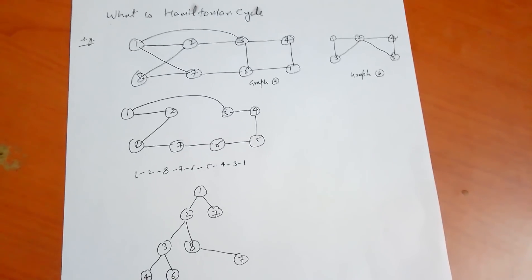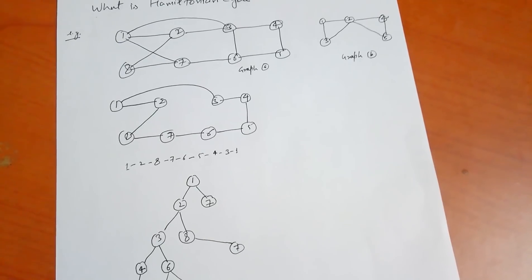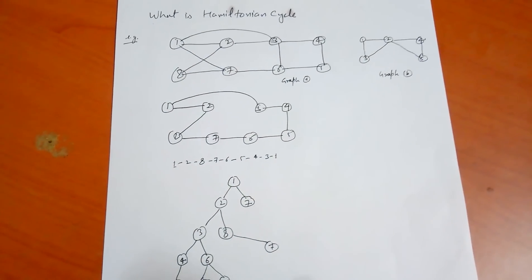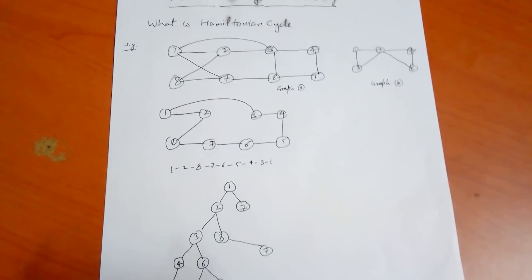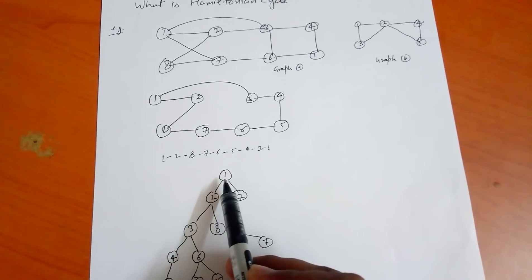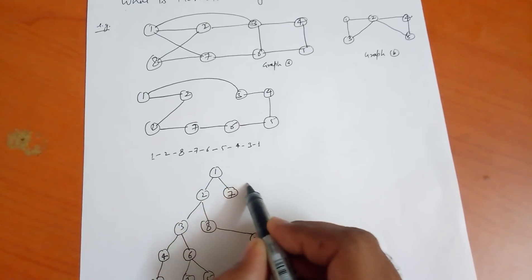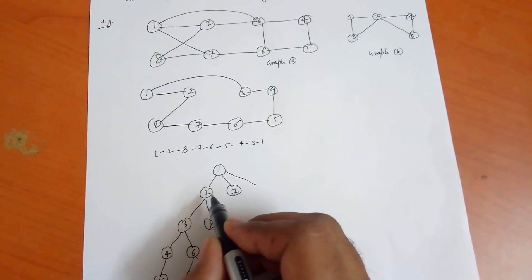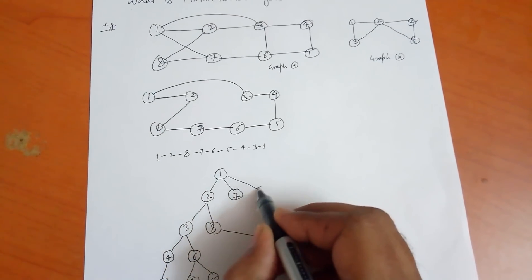To solve this Hamiltonian cycle problem, we use backtracking. For Graph A, we design a solution using backtracking. Starting from node 1, there are three possible ways to go: node 1 to 2, node 1 to 7, and node 1 to 3.